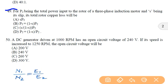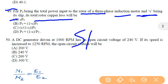In the next question, for P2 being the total power input to the rotor of a three-phase induction motor, and S being its slip, its total copper loss will be. We know that for a three-phase induction motor, the copper loss will be the input to the rotor into the slip, so S into P2. So option A will be the correct answer.